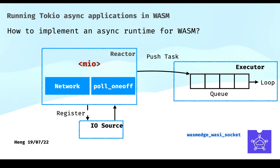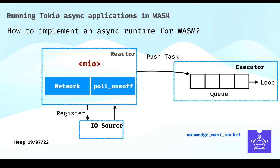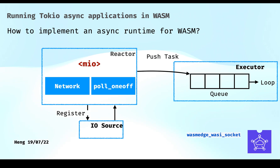Mio is the abstraction layer of non-blocking I/O libraries. It supports many operating systems, and we need to add WASI into it. We need to do two things: first, we need to add network functions for WASI. Currently, most of the network functions in standard libraries for WASI are empty, so we use a crate called wasi-sockets which implements common network functions in WASI. Next, we add the poll_oneoff function following the interface defined by Mio. After that, we have WASI support for Mio.